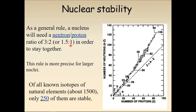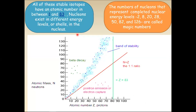If the neutron-to-proton ratio is 3:2 (1.5:1), the nucleus is more stable. Of all known isotopes of natural elements, about 1,500 exist, but only 250 are stable. All stable isotopes have atomic numbers between 1 and 83. Nucleons exist in different energy levels or shells in the nucleus. The magic numbers are 2, 8, 20, 28, 50, 82, and 126.